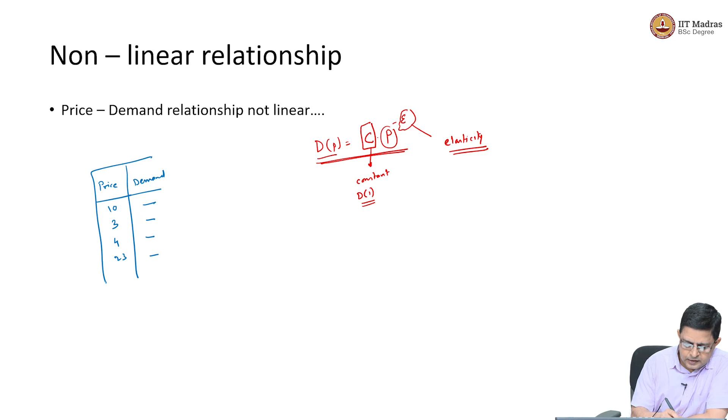This is the data that we have. Now, from this data, if we say that the relationship is non-linear and non-linear of this type, can we then use - can we still use regression and estimate the value of C, estimate the value of this constant, and estimate the value of elasticity from the data that we have?